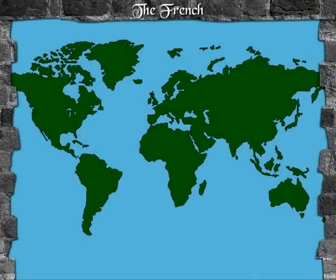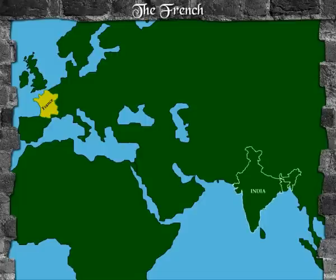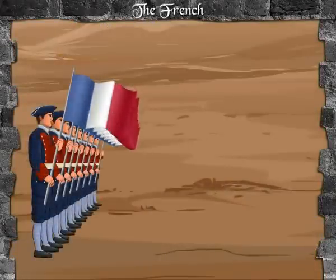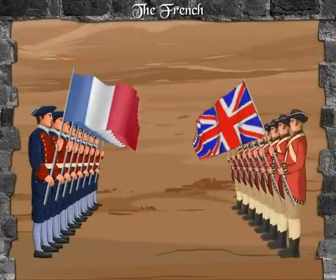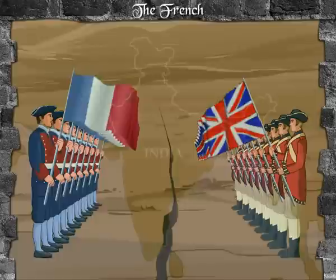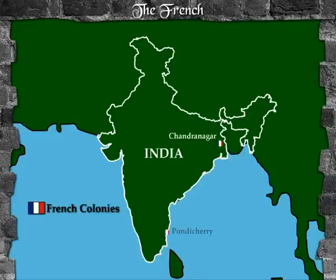The French started trading with India from 1625. Their interests in India clashed with those of the British. However, the British triumphed and the French had to be satisfied with dominating territories like Chandranagar, Pondicherry (or Puducherry), Karakal and Mahi.